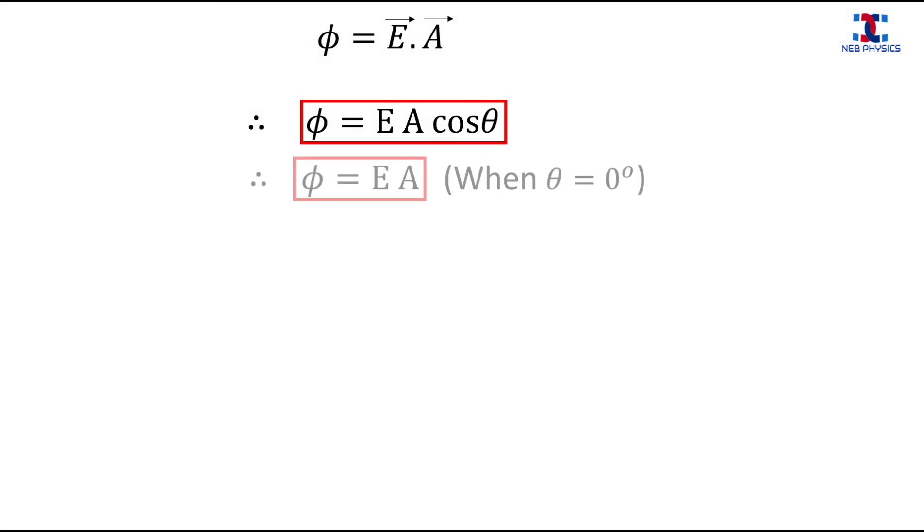The electric flux phi is equal to E A. So it is now very clear that the electric flux through a plane surface which is not held perpendicular to the path of electric lines of force is E A cos theta, and the electric flux through a plane surface which is held perpendicular to the path of electric lines of force is E A.